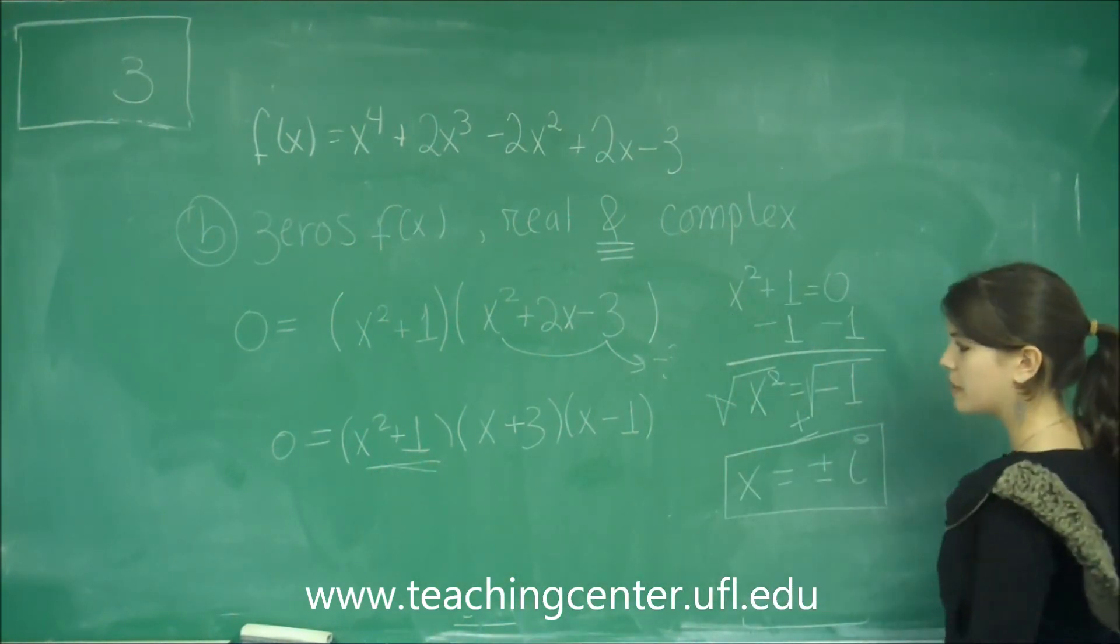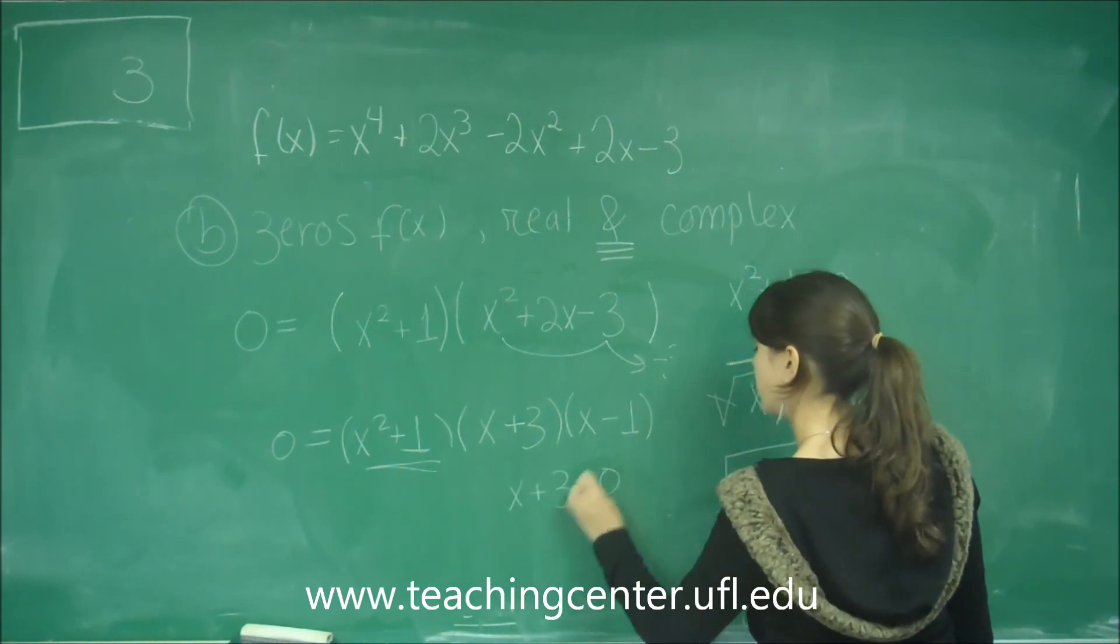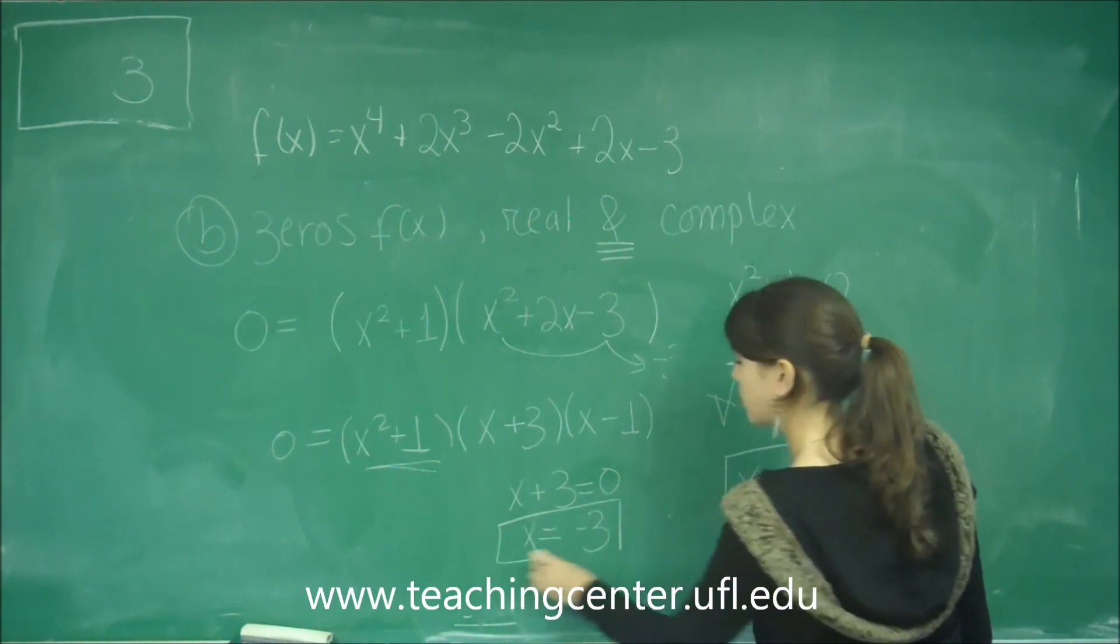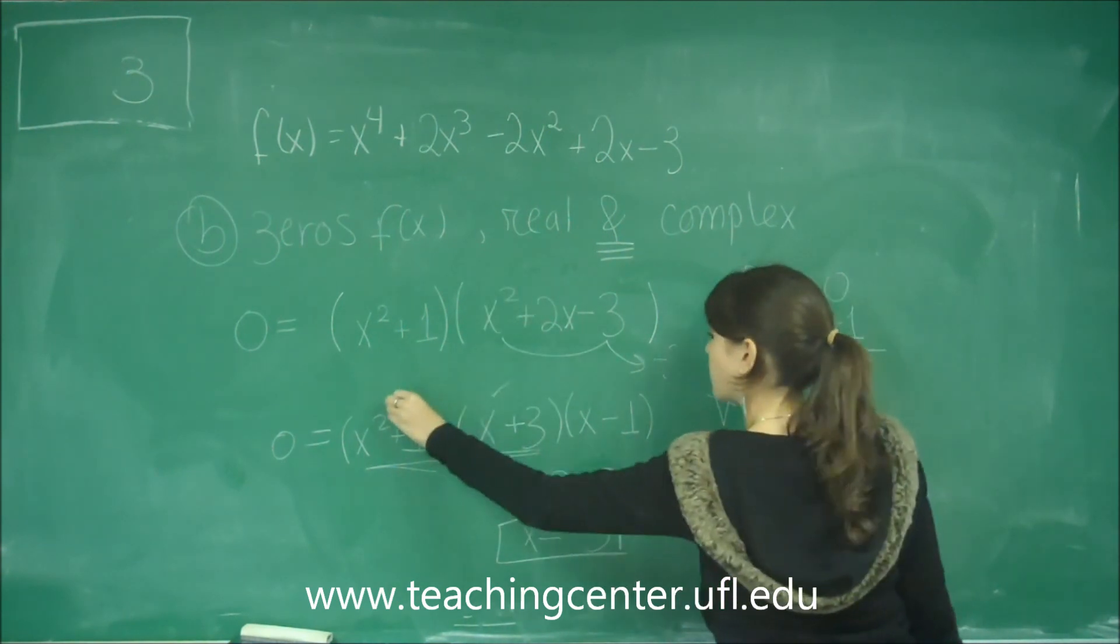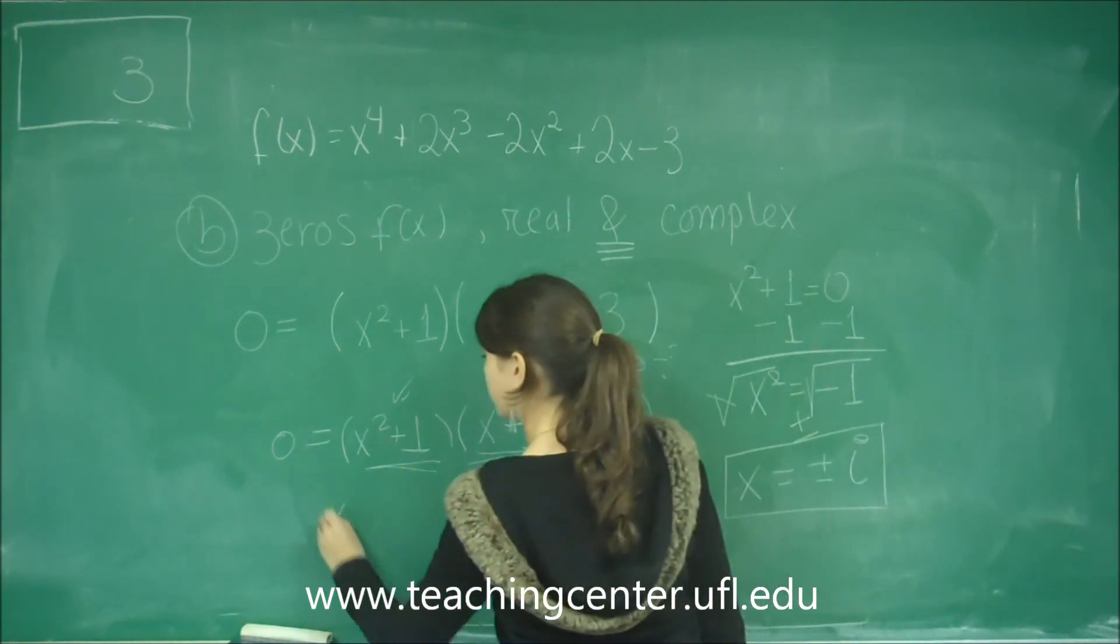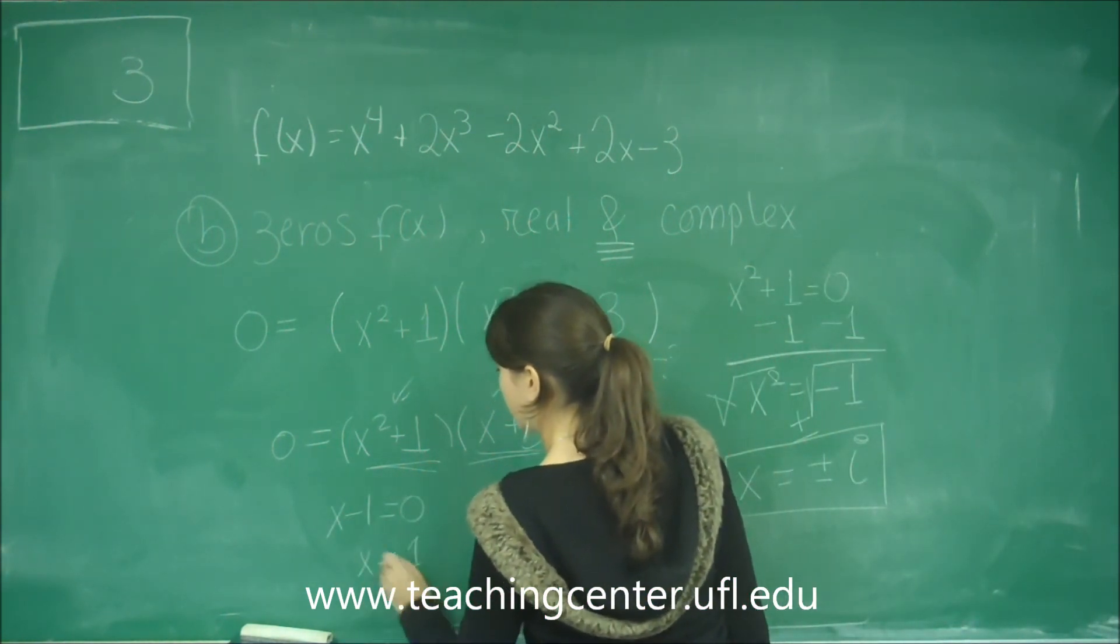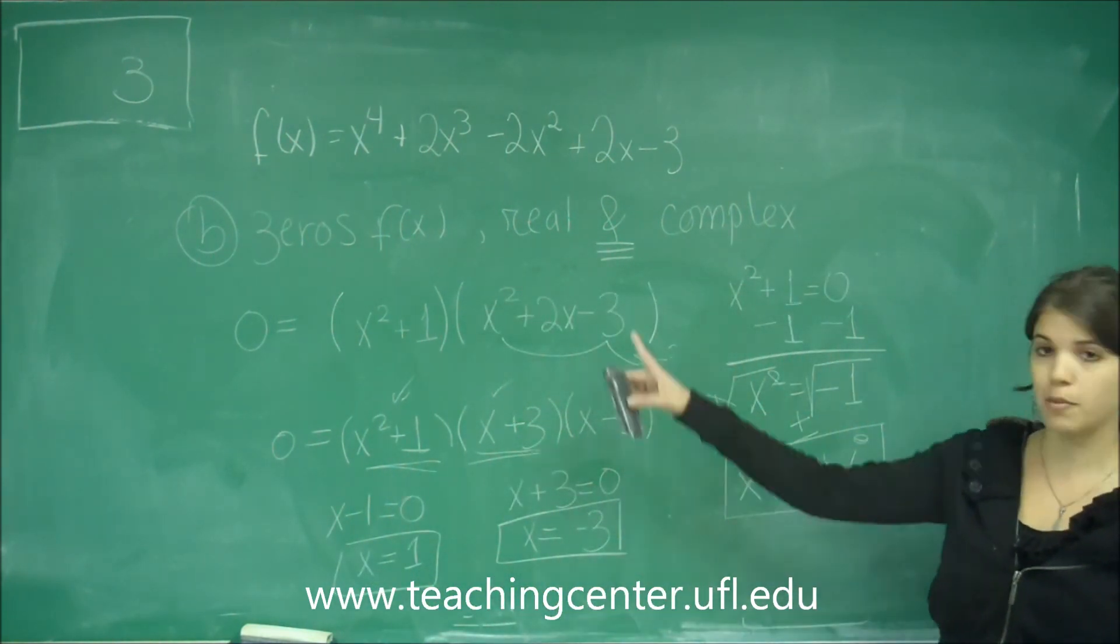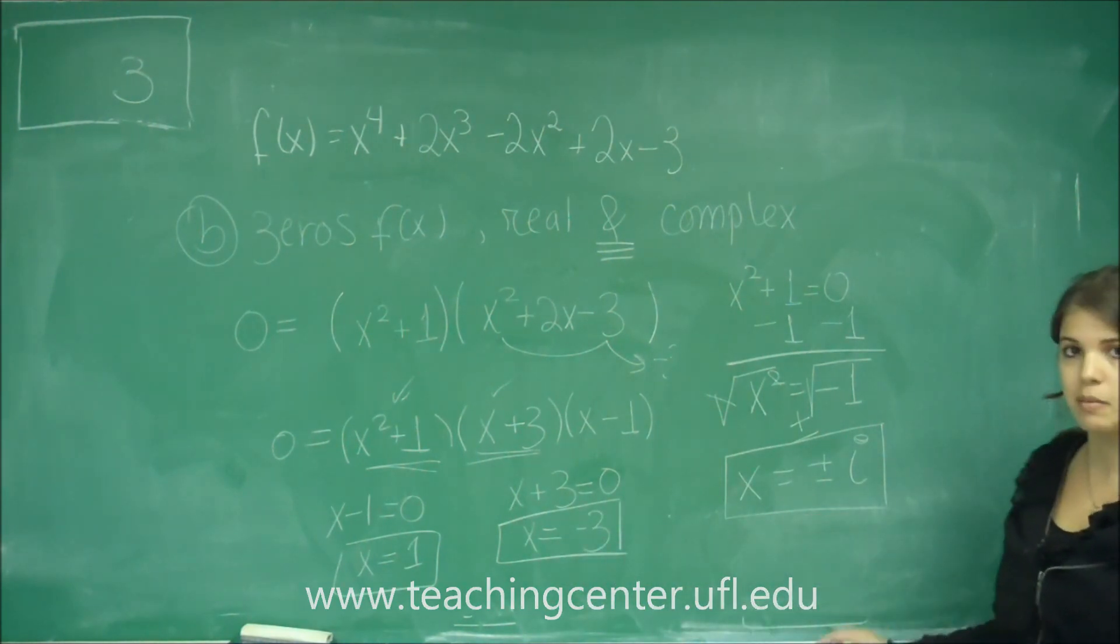The second solution is going to be when we set x plus 3 equal to 0. And if I subtract 3 from each side, I get x equals negative 3. And that's from this one. So I can start checking out the ones that I've done. And lastly, from x minus 1 equal to 0, if I add 1 to both sides, I get x equals to 1. So my solutions for my zeros are x equals to 1, x equals negative 3, x equals plus and minus i.